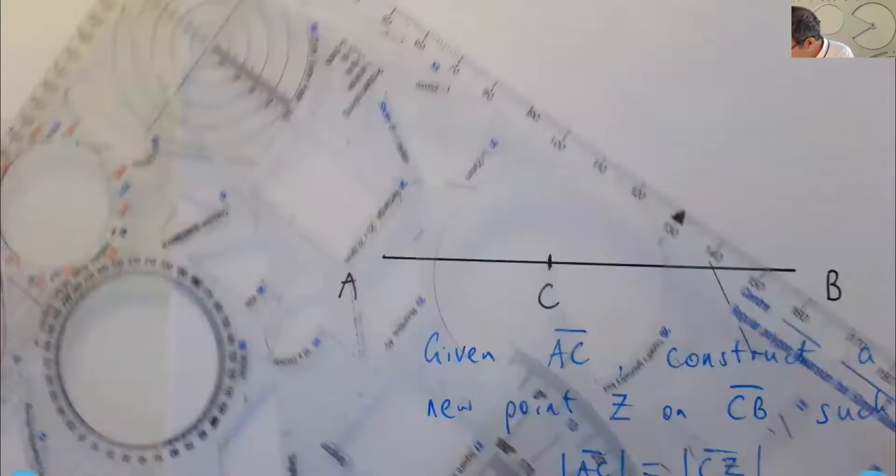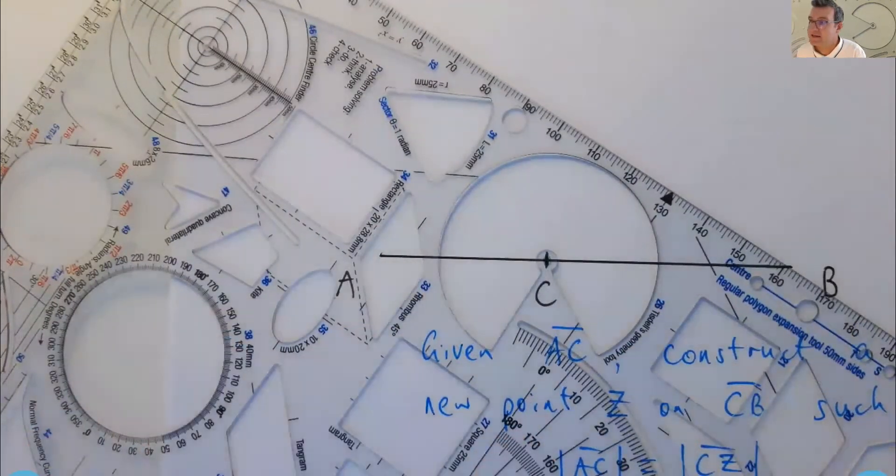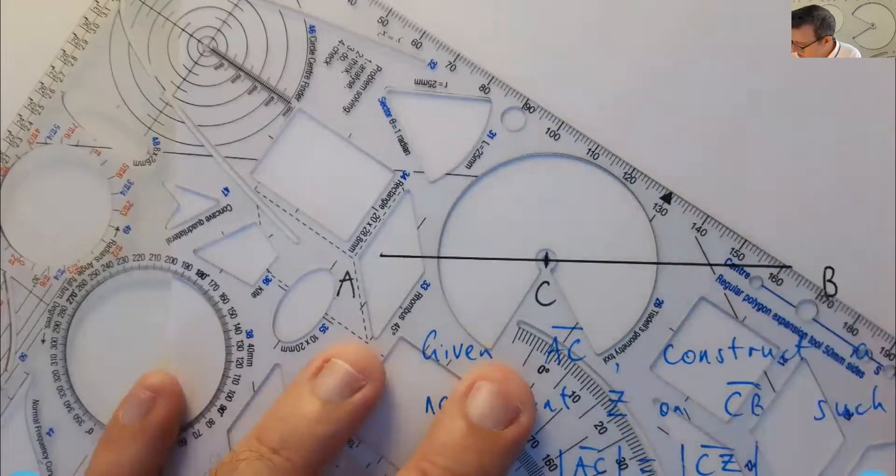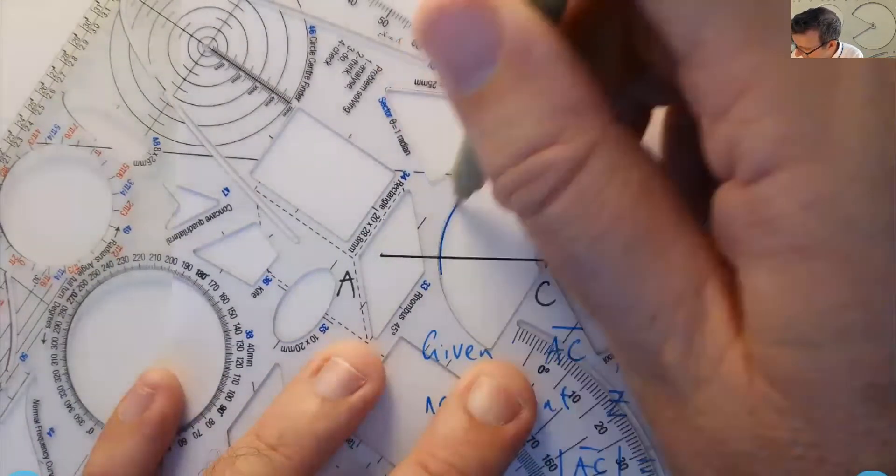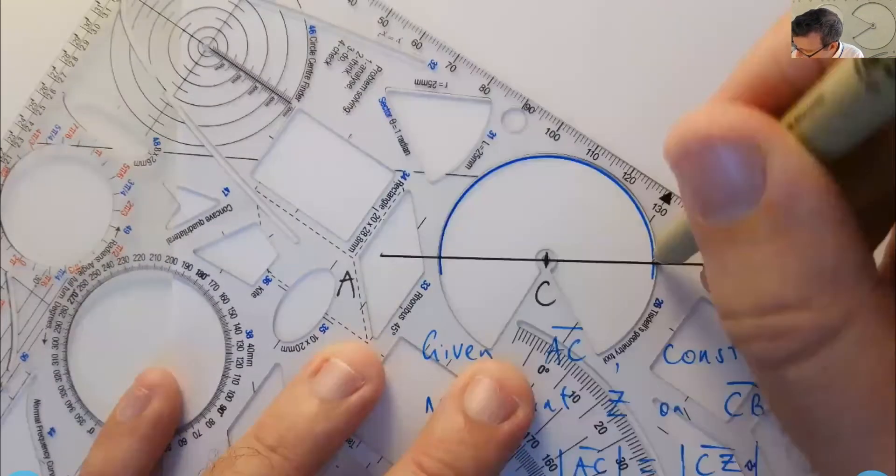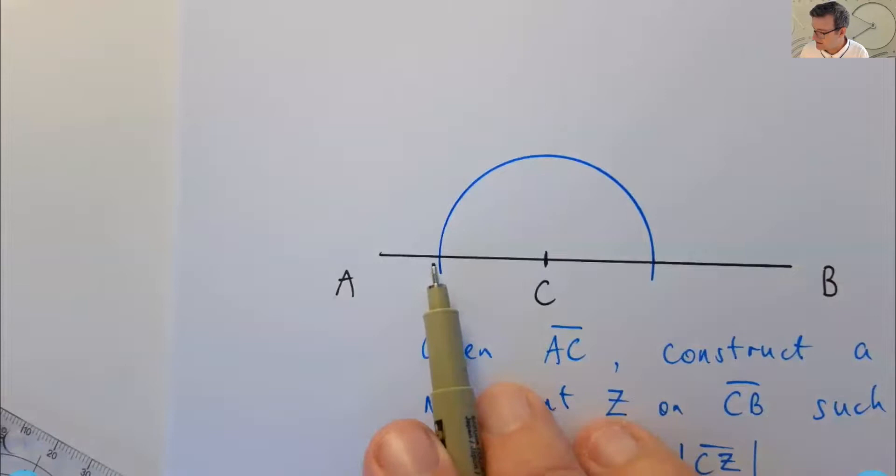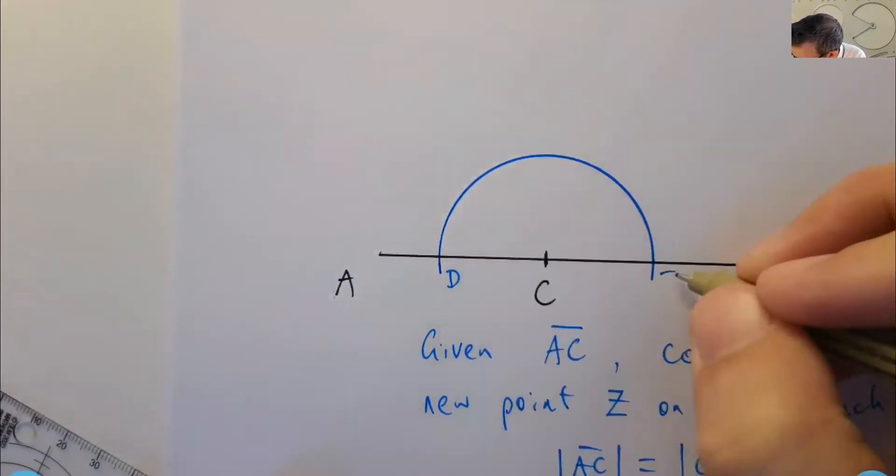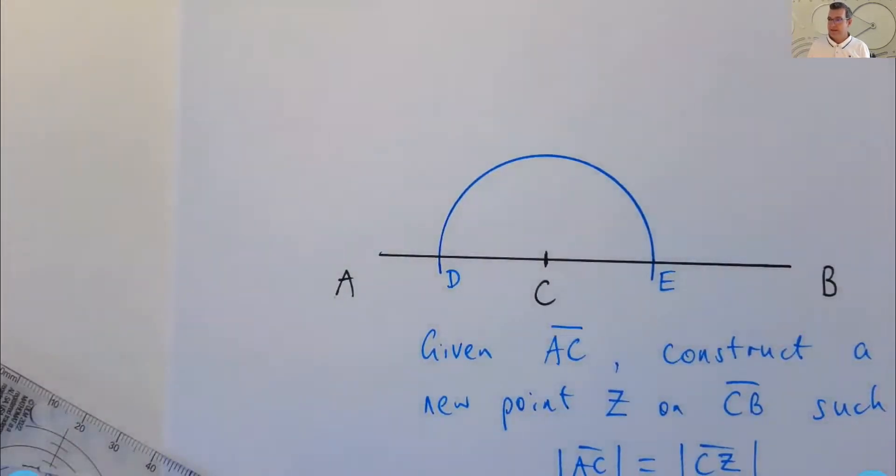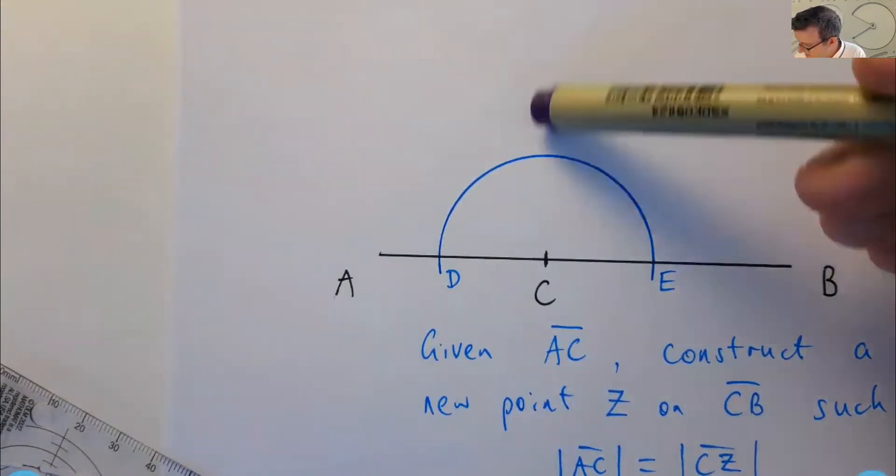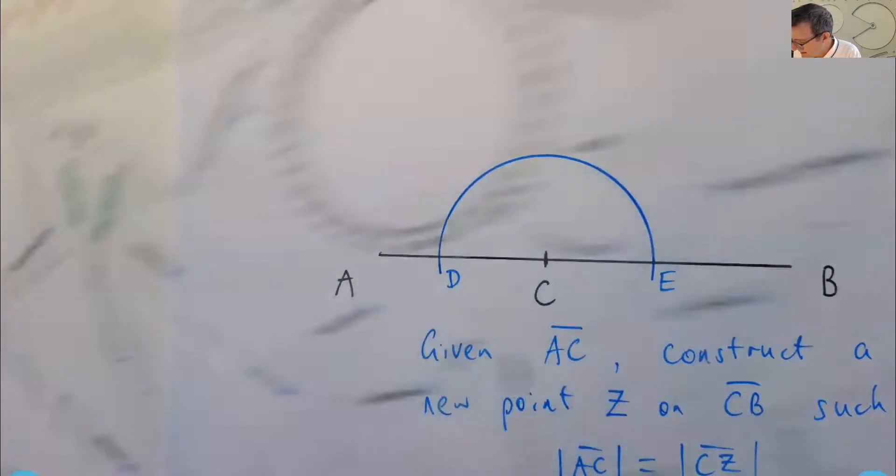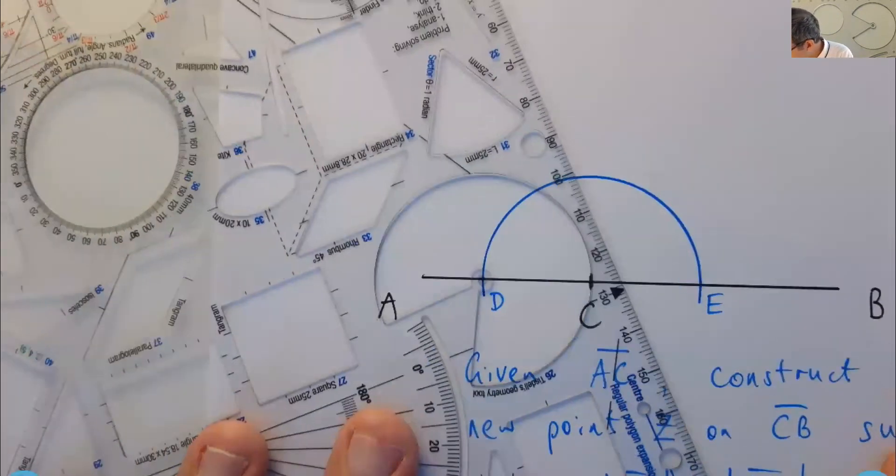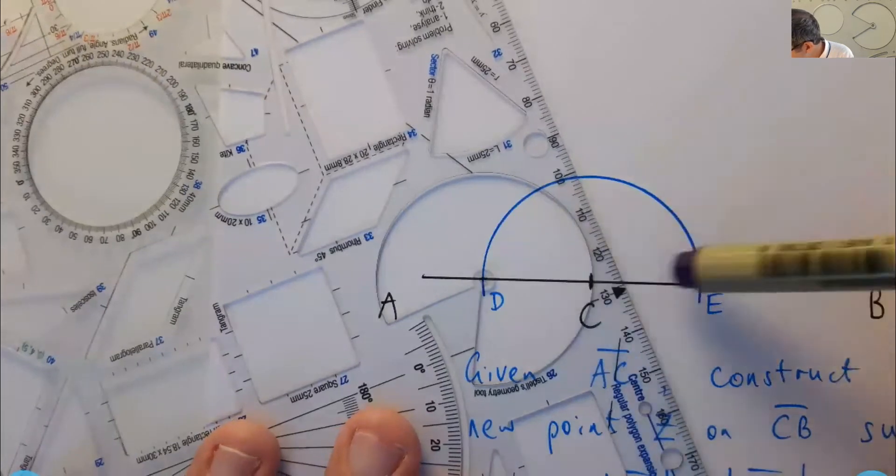Well, you might remember that we place the center of our circle arc template at C. And we draw something a bit bigger than a semicircle. So that it intersects with the line segment AB. So we've got two new points there. Let's call them D and E. Now, in order to get this perpendicular line, we're going to set up an equilateral triangle with base DC and CE.